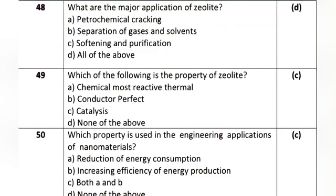Question 26: Which property is used in the engineering application of nanomaterials? Option A: reduction of energy consumption. Option B: increasing efficiency of energy production. Option C: both A and B. Option D: none of the above. The correct answer is Option C: both A and B.